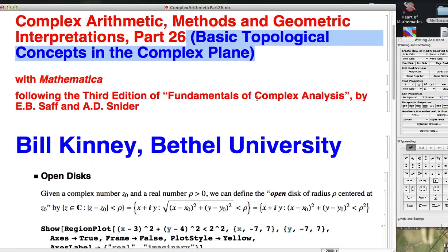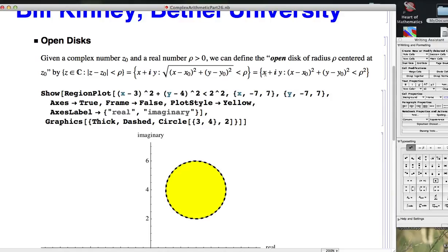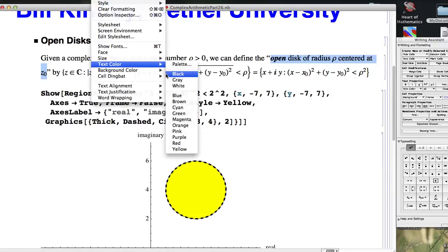What we did was we defined the notion of an open disk centered at a certain point with a certain radius. So you've got a point z₀ in the complex plane, and you've got a certain radius, positive number ρ.